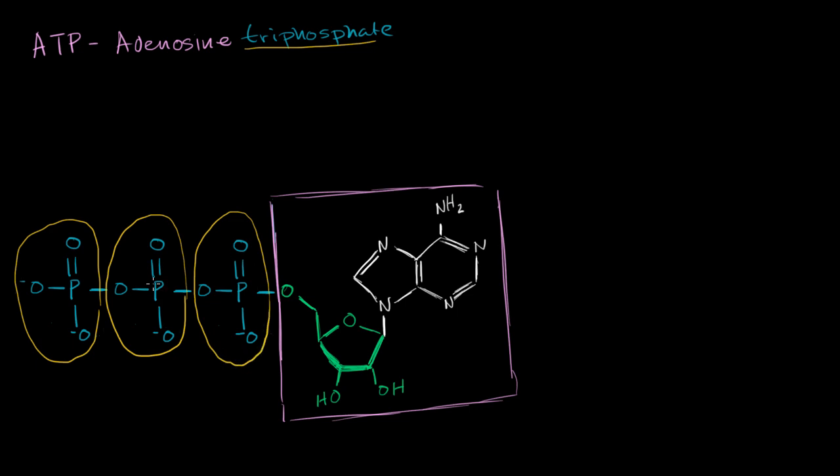So one way that you can conceptualize this molecule, which will make it a little bit easier to understand how it's a store of energy in biological systems, is to represent this whole adenosine group as AD, bonded to the three phosphoryl groups. Or sometimes you'll see it depicted with essentially higher energy bonds, instead of just drawing these straight horizontal lines. But I'll just do it this way for the sake of this video.